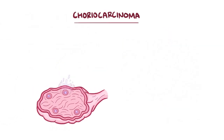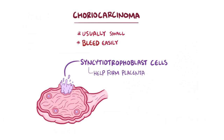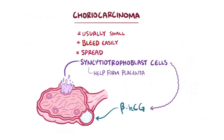The third subtype is a choriocarcinoma, and it's made of germ cells that turn into syncytiotrophoblast cells, which are the ones that help form the placenta. These tumors are usually small, bleed easily, and often spread beyond the ovaries. The syncytiotrophoblast cells secrete high levels of the hormone beta-human chorionic gonadotropin, and that can cause ovarian cysts to form.